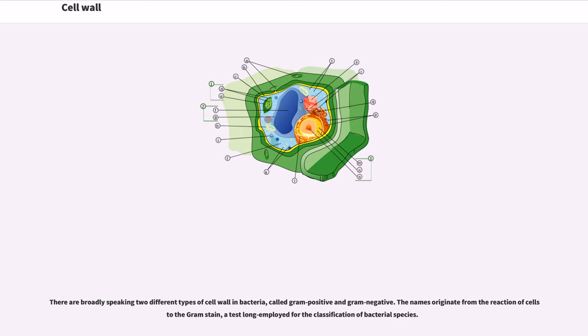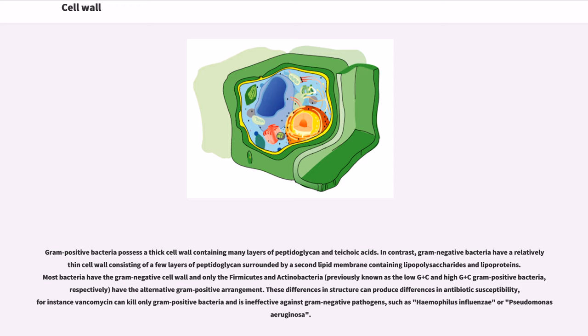There are broadly speaking two different types of cell wall in bacteria, called gram-positive and gram-negative. The names originate from the reaction of cells to the Gram stain, a test long employed for the classification of bacterial species. Gram-positive bacteria possess a thick cell wall containing many layers of peptidoglycan and teichoic acids. In contrast, gram-negative bacteria have a relatively thin cell wall consisting of a few layers of peptidoglycan surrounded by a second lipid membrane containing lipopolysaccharides and lipoproteins. Most bacteria have the gram-negative cell wall and only the Firmicutes and Actinobacteria, previously known as the low G+C and high G+C gram-positive bacteria, respectively, have the alternative gram-positive arrangement. These differences in structure can produce differences in antibiotic susceptibility, for instance vancomycin can kill only gram-positive bacteria and is ineffective against gram-negative pathogens, such as Haemophilus influenzae or Pseudomonas aeruginosa.